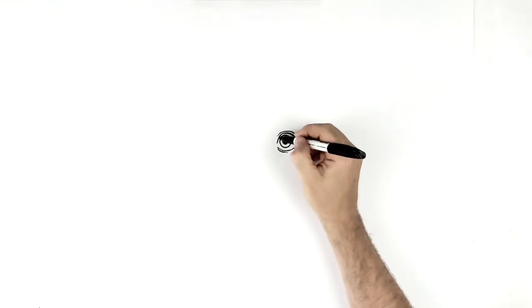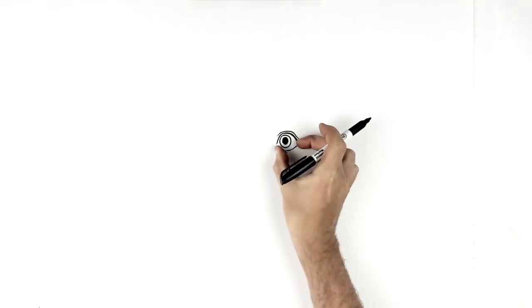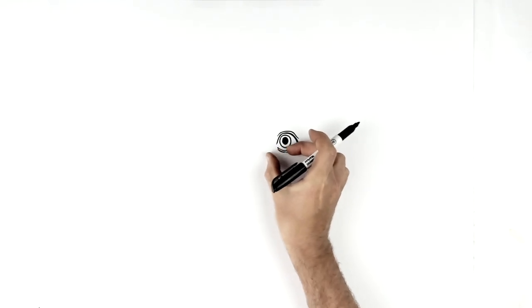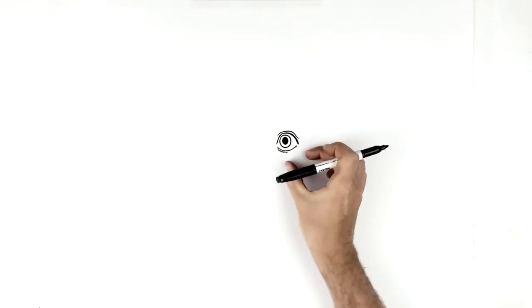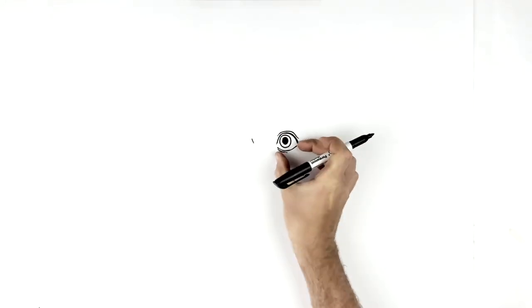Like so, and then we'll give him a top eyelid line just coming across here. Go over and do the other eye. So we have, where are we, one eye width. I'd say roughly you could nearly fit an eye in between both eyes.